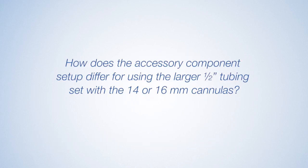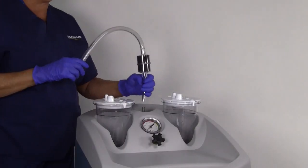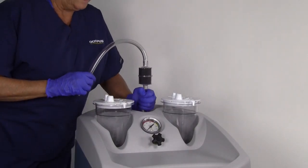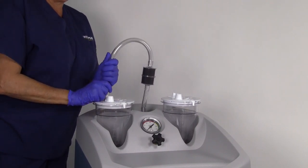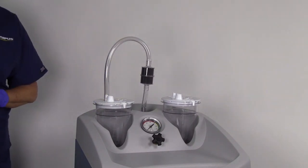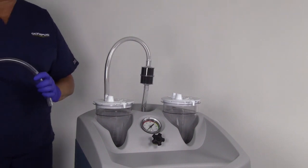How does the accessory component setup differ for using the larger 1.5 inch tubing set with the 14 or 16 millimeter cannulas? The setup for the 1.5 inch tubing set, BKT-506, is basically the same as the standard setup, except for a couple of component replacements.